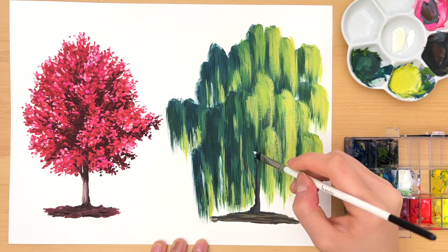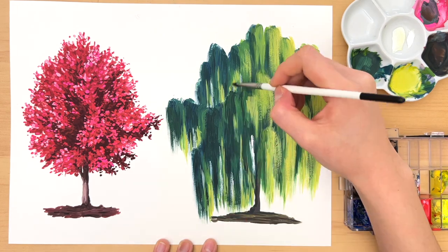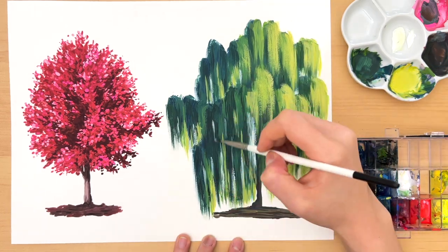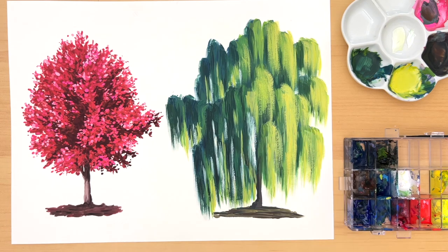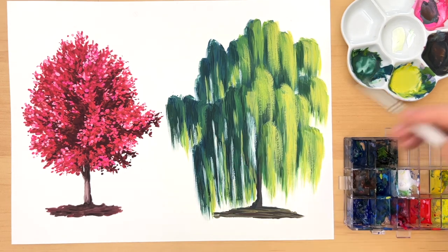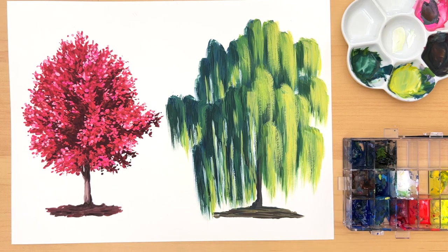And finally, I'm using white to add some of the empty area behind the willow tree. Usually I would use my background color for this, but since my background currently is just the white paper, that's why I'm using white here.